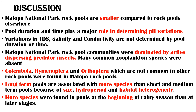In summary, the Matapos rock pools are generally smaller compared to other rock pools. Pool duration and time did not really affect anything other than pH. The pools were dominated by actively dispersing insects, and interestingly, Collembola, Hymenoptera, and Orthoptera — not commonly found in other rock pools — were found in the Matapos rock pools.